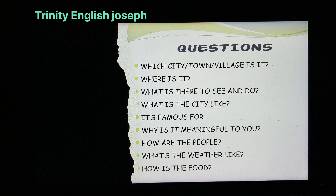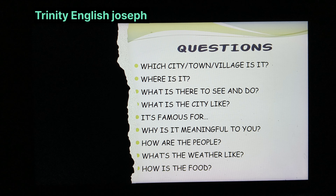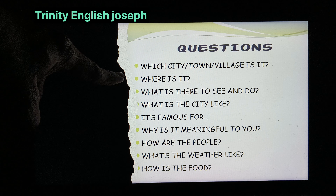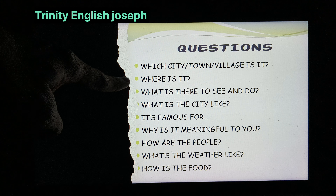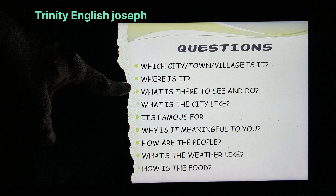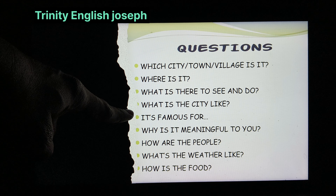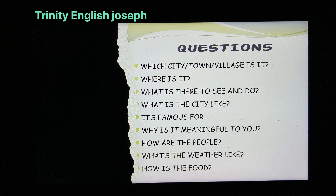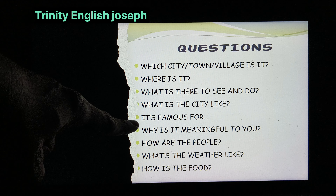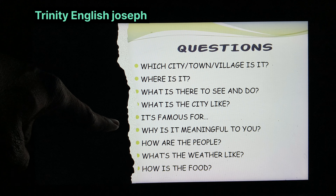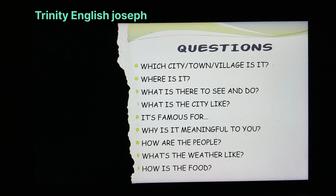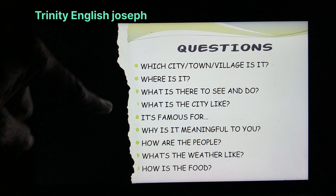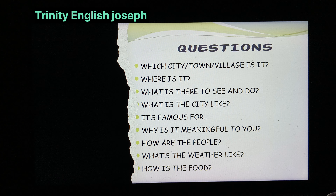What are the questions that you should put into mind when you describe a place? These are the main things we generally write about: Which city, town, or village is it? Where is it — the location? What is there to see and do? What are the most important places to visit? What is the city like — how does it look? What is it famous for? Why is it meaningful to you? How are the people and what kind of people do you find there? What is their way of living? What's the weather like? And how is the food?